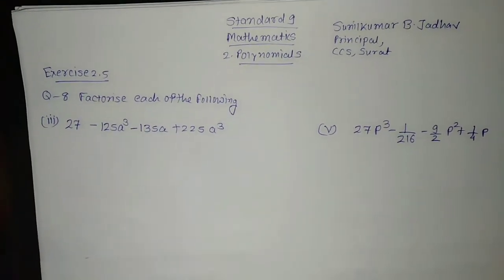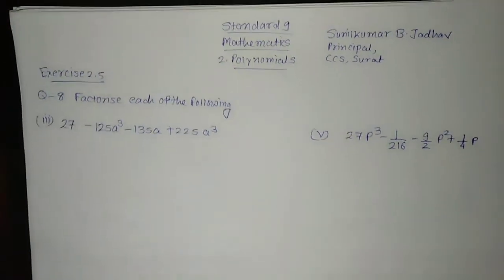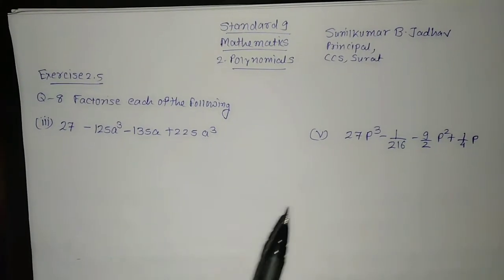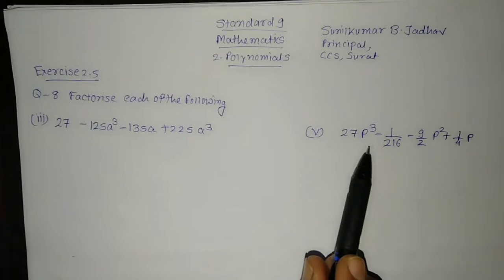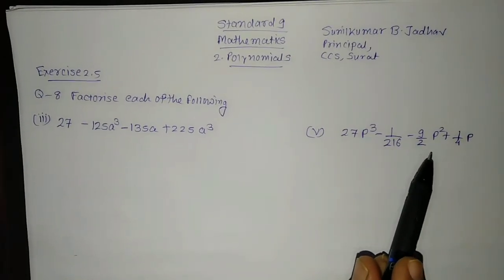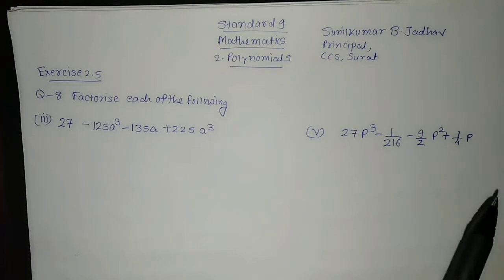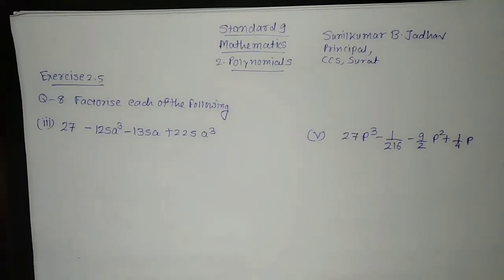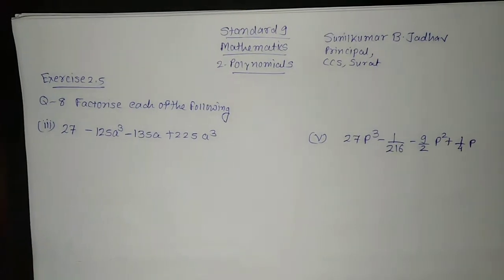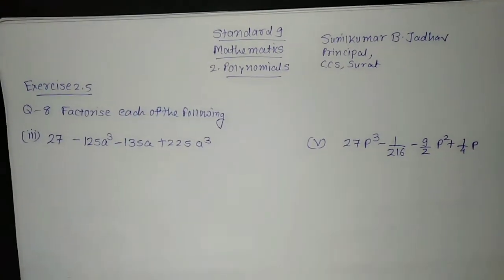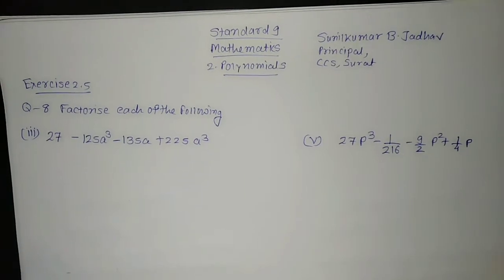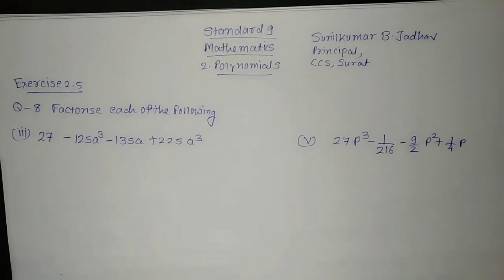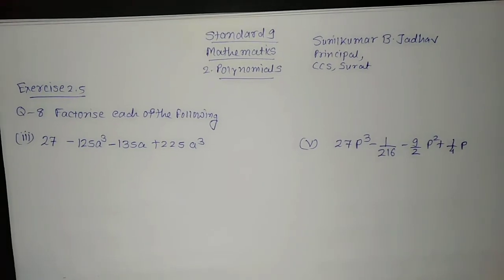Factorize the following: 27 minus 125a cube minus 135a plus 225a square, and the other one, 27p cube minus 1 upon 216 minus 9 by 2 p square plus 1 upon 4p. We will solve these in this video. Hello friends, myself Sunil Kumar Jadav, principal of Sishisa Sarwajinic English High School. Standard 9 Mathematics, Chapter 2, Polynomial. Here we are going to solve question number 8: Factorize each of the following from exercise 2.5. So let us begin.